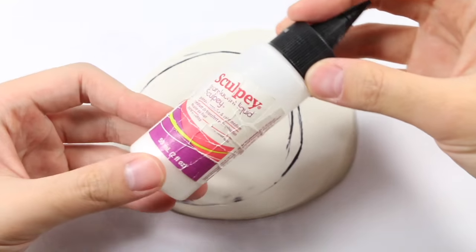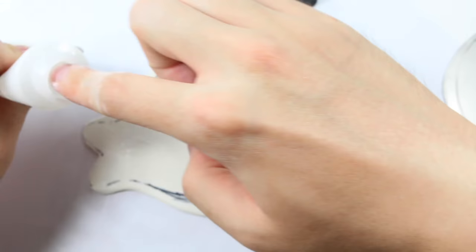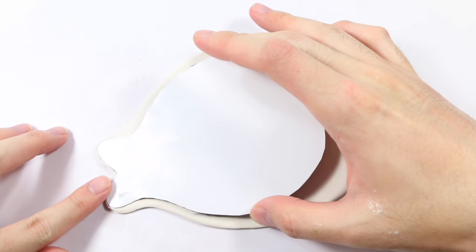Then I'm rubbing on TLS all over the middle part of the belly and I'm using that as the glue to stick the whiteboard onto the piece of clay.